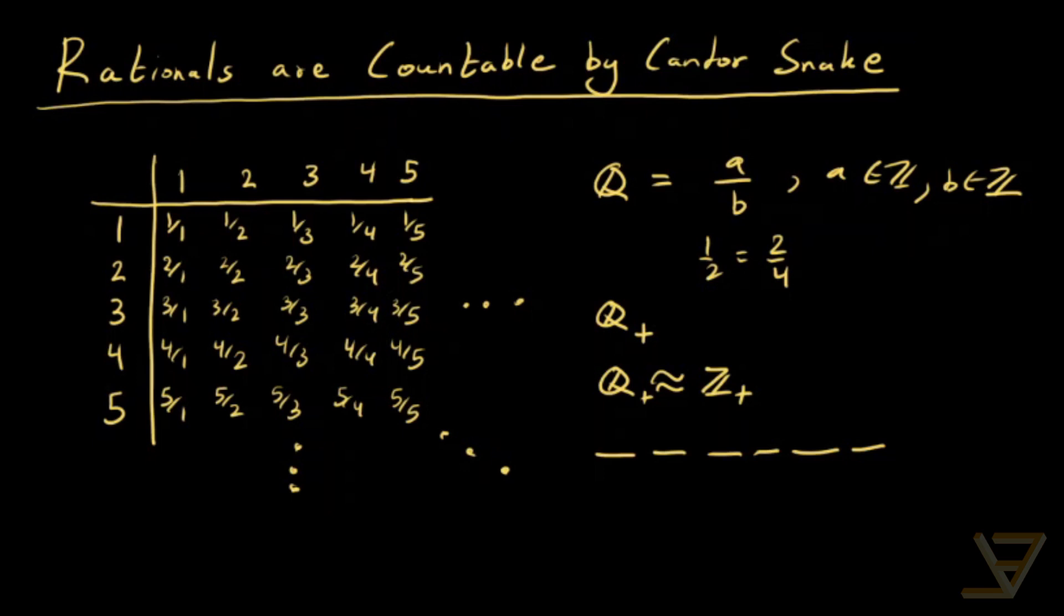So look at this array here, this infinite array. In row i and column j we write the number i over j. Now it's clear that all rational numbers are in this matrix, this infinite matrix.